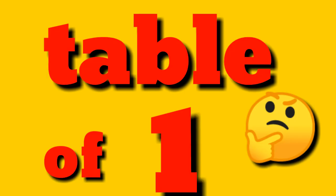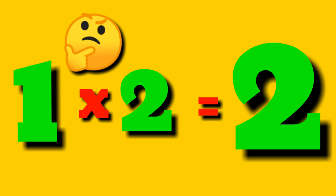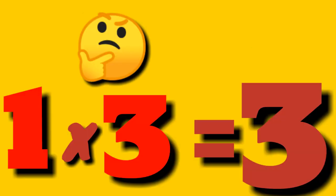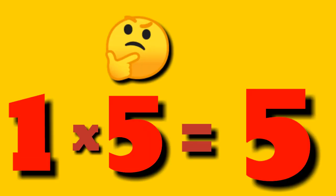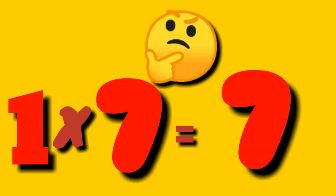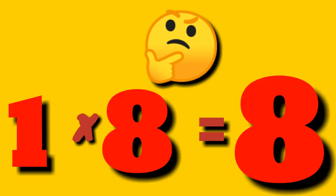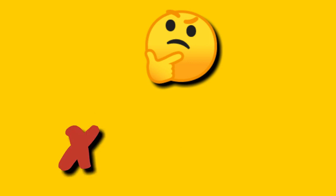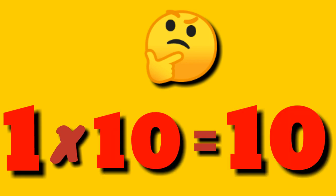Table of 1. 1 one is 1, 1 two is 2, 1 three is 3, 1 four is 4, 1 five is 5, 1 six is 6, 1 seven is 7, 1 eight is 8, 1 nine is 9, 1 ten is 10.